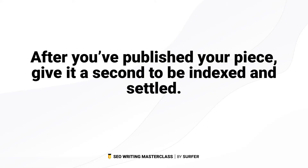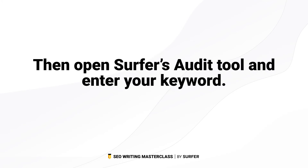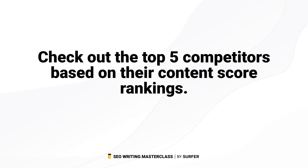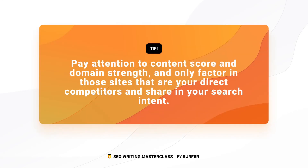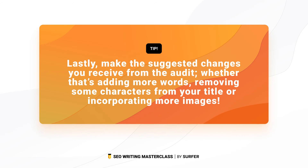Let me sum it up for you one more time. After you've published your piece, give it a second to be indexed and settled. Then open Surfer's audit tool and enter your keyword. Check out the top 5 competitors based on their content score rankings. Pay attention to their content score and their domain strength, and only factor in the sites that are your direct competitors and share your user intent. Make the suggested changes you receive from the audit, whether that's adding more words, removing some characters from your title, or incorporating more images.